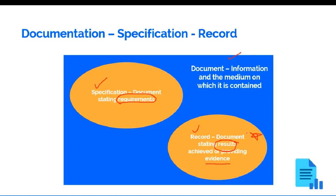A documented process for management reviews is a document, and this process generates records such as management review minutes. A documented procedure for continual improvement is a document, and a filled corrective action form is a record.